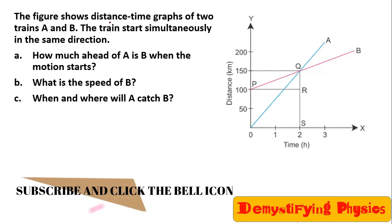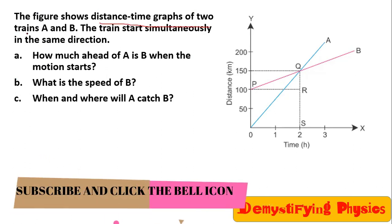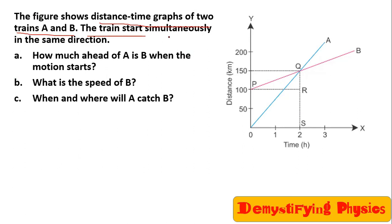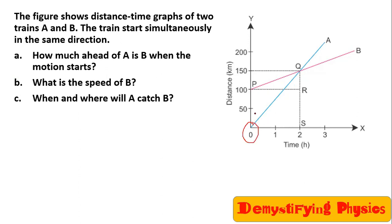The figure shows distance-time graphs of two trains A and B. The trains start simultaneously in the same direction. How much ahead of A is B when the motion starts? At time 0, train A is at the origin and train B is ahead. So we can say that train B is 100 kilometres ahead of A.